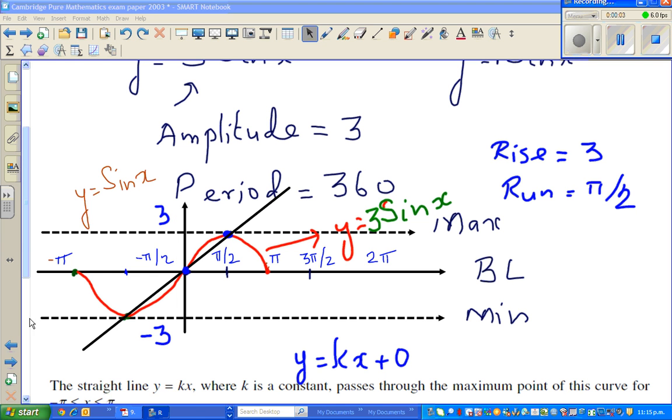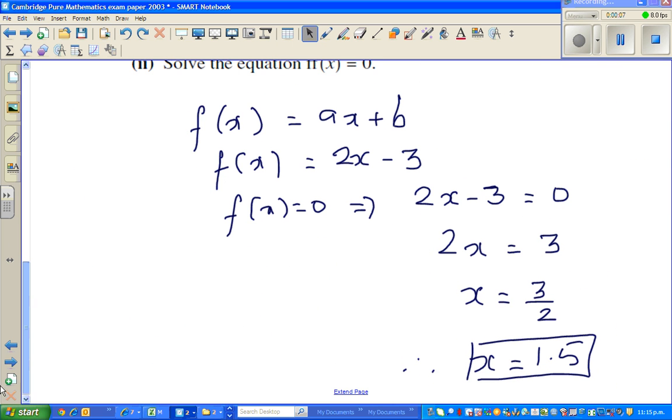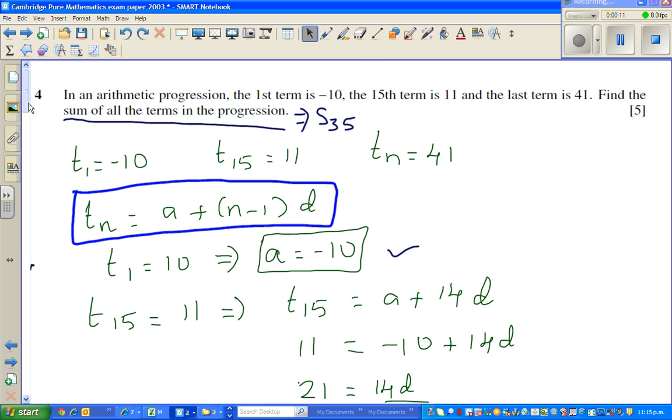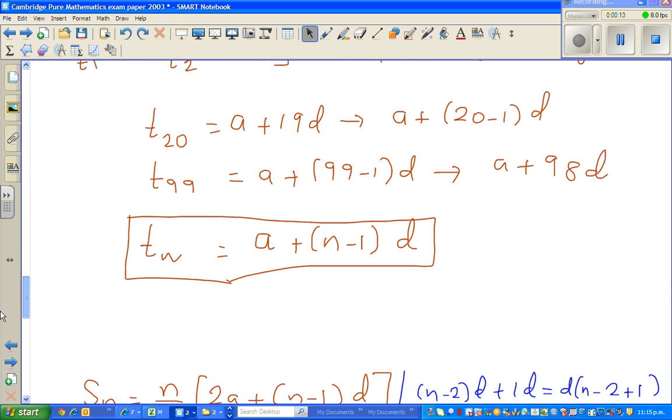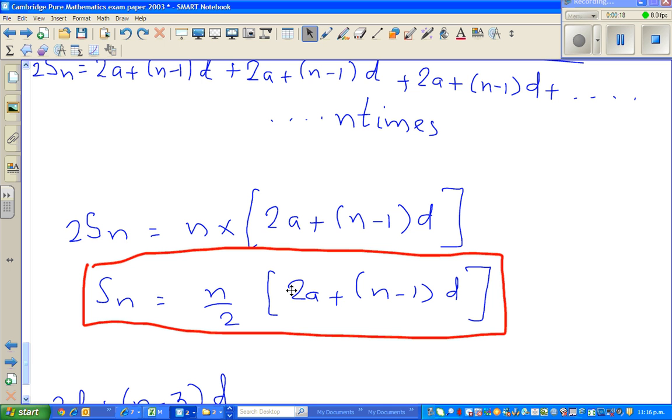Continuing from my last video where we proved the SN formula. This is what we proved: SN is equal to this formula which is n by 2 times 2a plus n minus 1 times t.